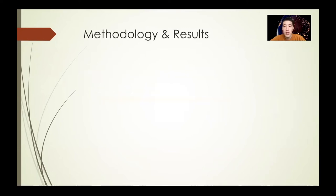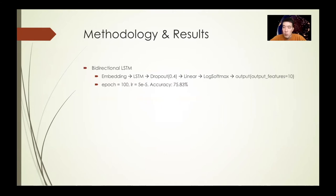Due to data imbalancing, we propose an automatic classification model on CVE entries for the top 10 CWE categories in terms of CWE frequency. We propose three different deep neural network models and compare their performances. The first is the bidirectional LSTM. We applied embedding layers with the LSTM, followed by a dropout layer, fully connected layer, and softmax.